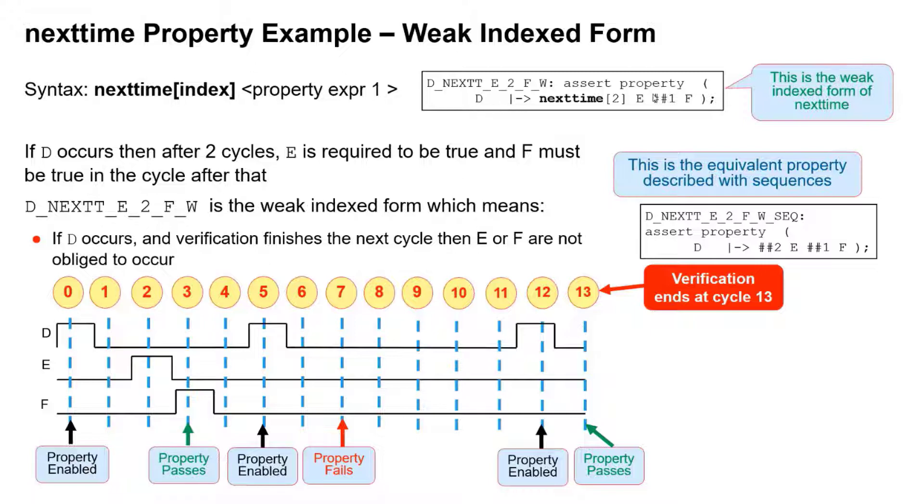So if d is true, then the right-hand side must occur. d is true, then in two cycles from now, 1, 2, e must be true, and the cycle after that, f must be true. So the property which became enabled at cycle 0, once f has occurred at cycle 3, that property has passed.